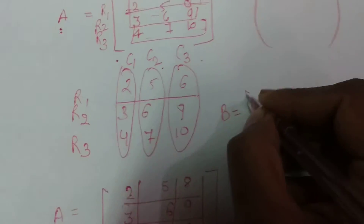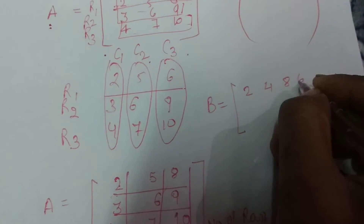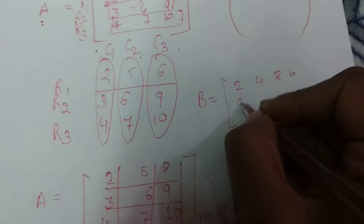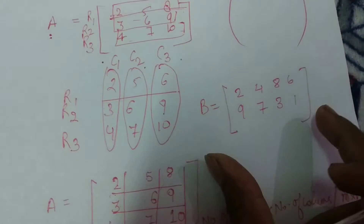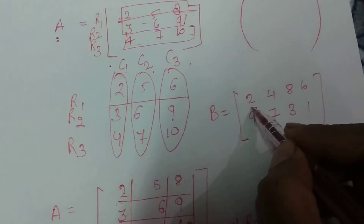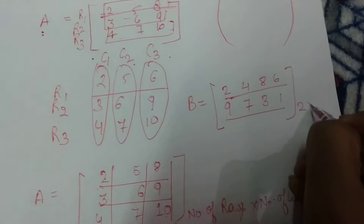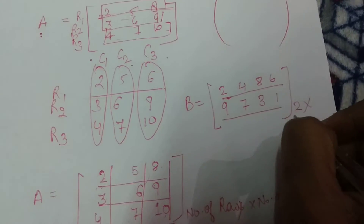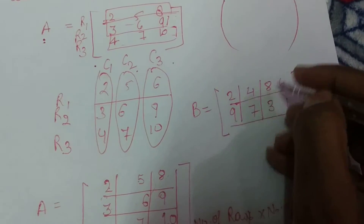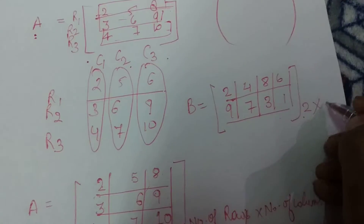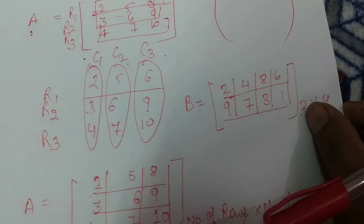Let's take another example. We have another matrix: 2, 4, 8, 6, 9, 7, 3, 1. If we find the order, we count the number of rows — 2 rows. Then we count the columns: 1, 2, 3, 4 — 4 columns. So the order is 2 by 4. This is the order of this matrix.